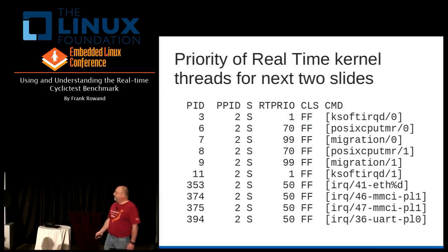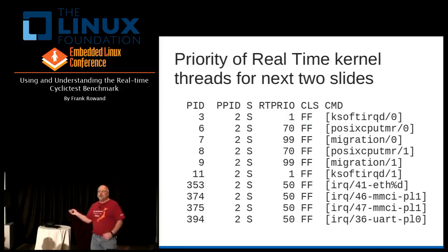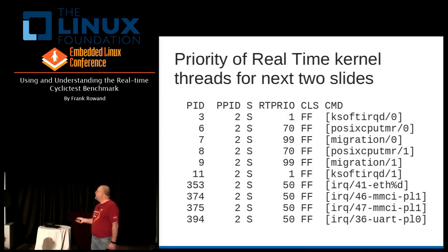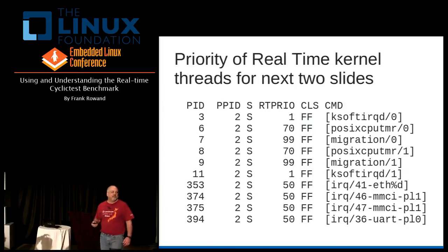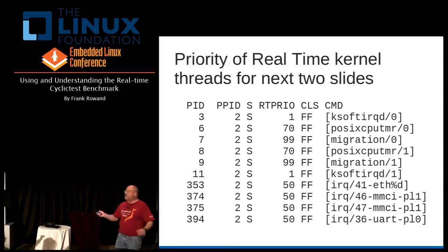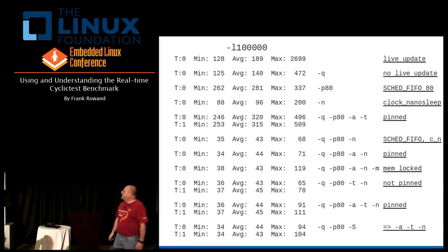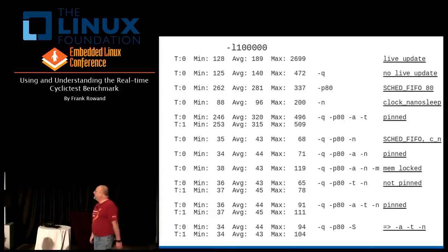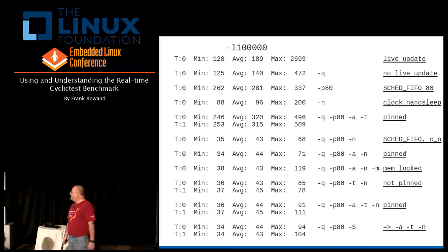Just one more detail: since we're going to be talking about priorities, most of my real-time threads are running at 70 or 50. My kernel threads that are always there — there's one I cannot change. The migration thread is set to 99. You try and change it, it won't let you — sched_setscheduler just blows you off. You'll crash the system if you did.